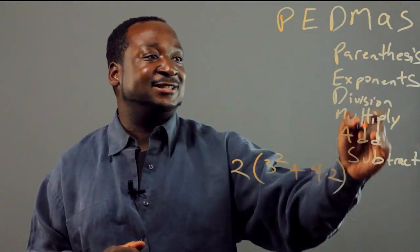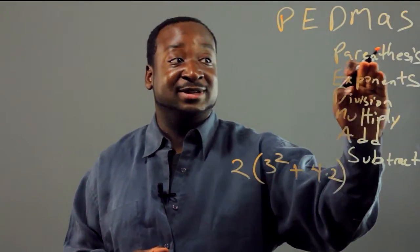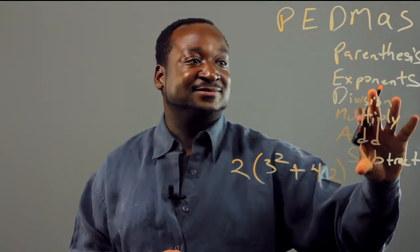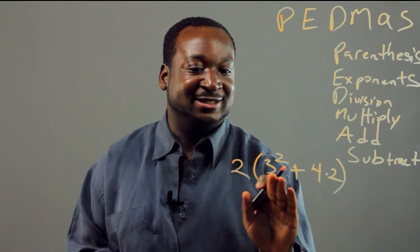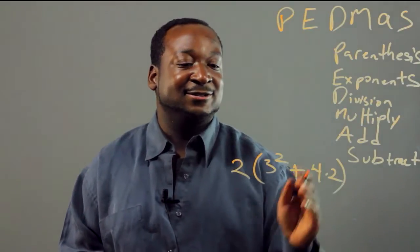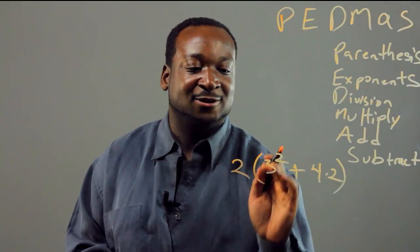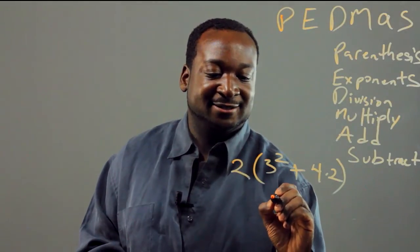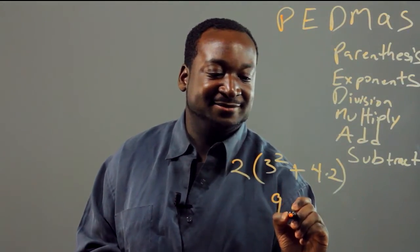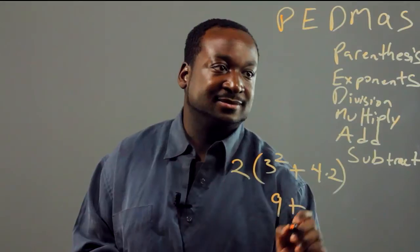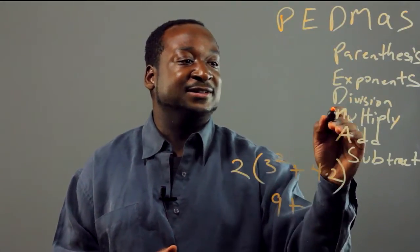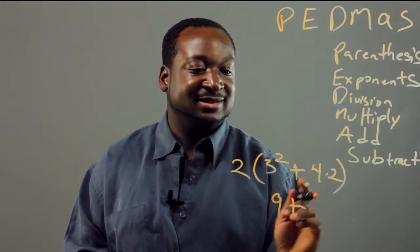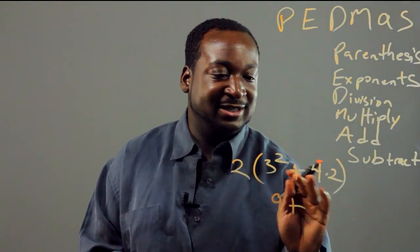We're going by this chart here. We do parentheses first, and then we solve for the exponents. So that's 9. And then we do our division and then multiplication. That's 9.